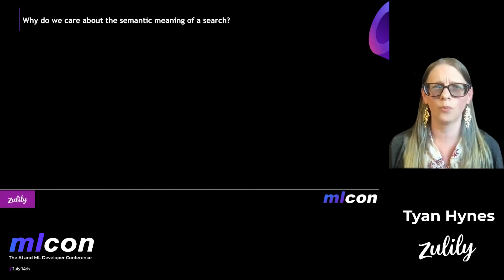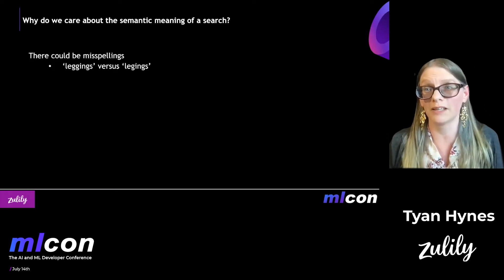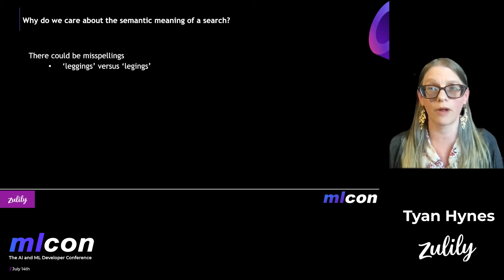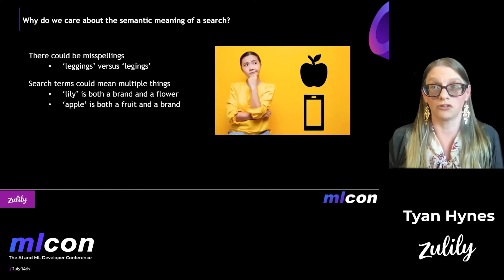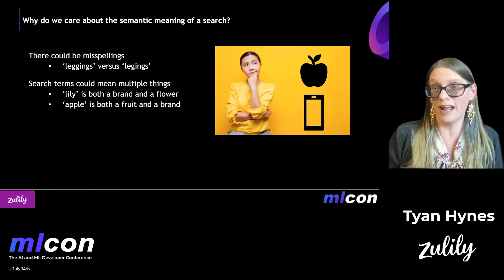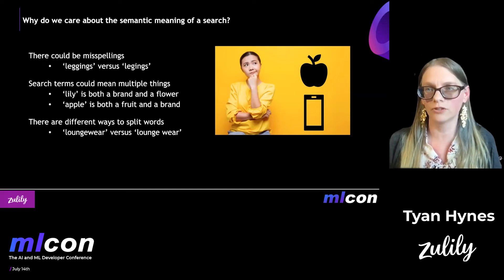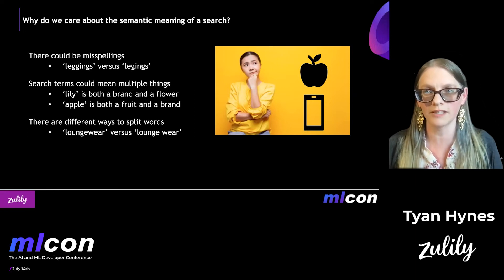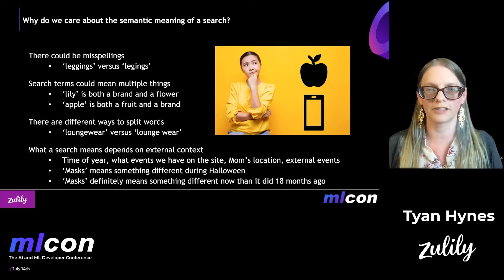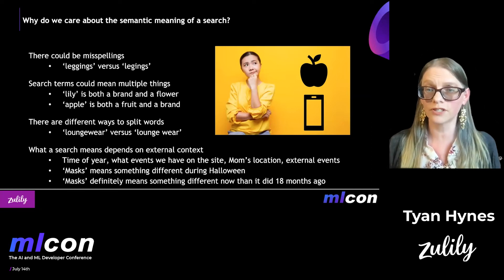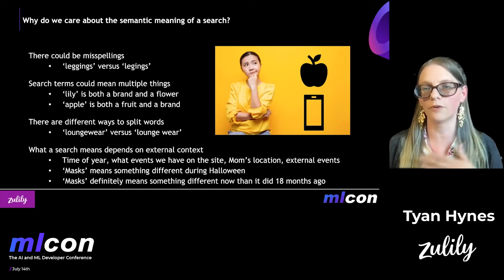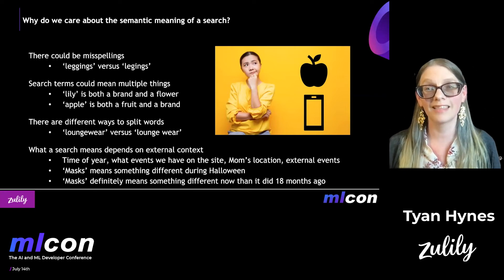Let's start with the semantic piece. Why do we really care about the semantic meaning of the search? There could be misspellings — if someone spells 'leggings' with one G, you might miss a great opportunity. Search terms can mean multiple things: when somebody types 'lily,' do they mean the brand or the flower? When they type 'apple,' are they looking for the fruit or the brand? There are different ways to split words — does 'loungewear' mean the same as two separate words? And what a search means depends on external context too, like time of year, events on your site, or customer location. Masks mean something different in Halloween season than the rest of the year — and they definitely mean something different now than 18 months ago.